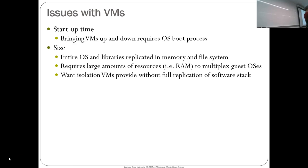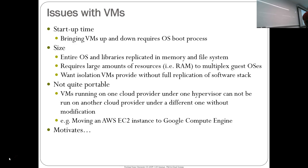You really want isolation between virtual machines without having to do a full replication of the software stack. Why can't I share parts of the OS kernel used across multiple VMs? If I have five Ubuntu 18.04 VMs on my laptop, why do I need to install a copy for each one? The other issue is portability — taking a VM from Google Cloud over to AWS is not trivial. This motivates containers.